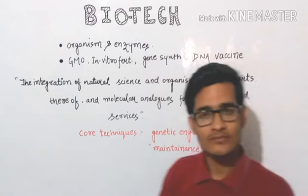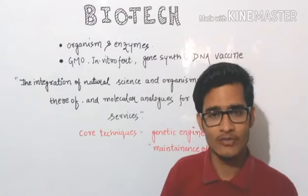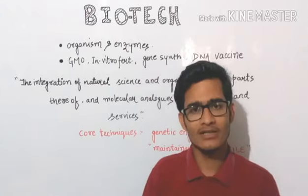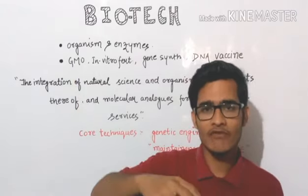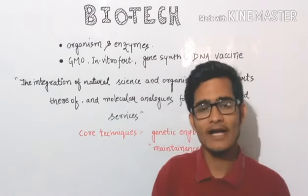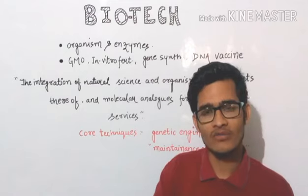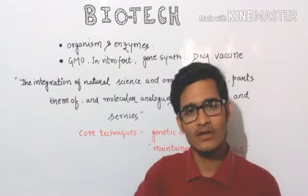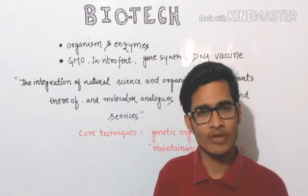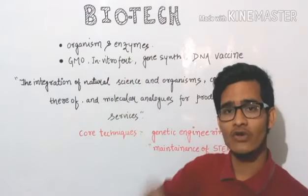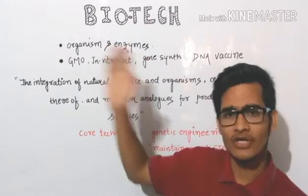The next concept is in vitro fertilization — the test tube baby. For example, when there is an impotent male, in vitro fertilization is performed: the sperm and ovum are fertilized in a test tube. The zygote which is formed is known as a test tube baby, which can then be inserted into the female and will develop as a normal baby. So in vitro fertilization, or test tube baby formation, is also included in biotechnology.